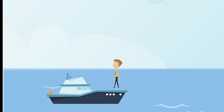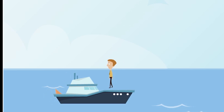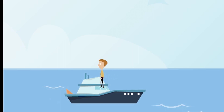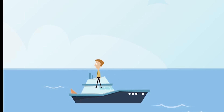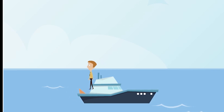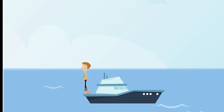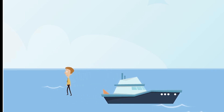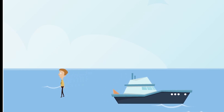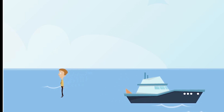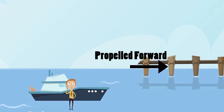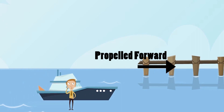Imagine a man standing at the front of a boat who starts running back and jumps off. Because he has gained momentum in the backward direction, the boat according to Newton's third law is now propelled forward. This is exactly like the ejection stroke.